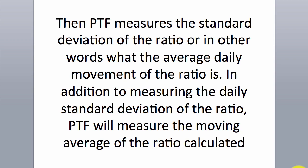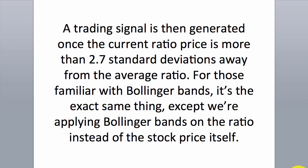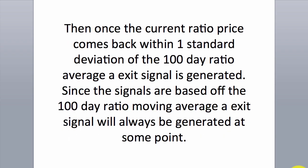In addition to measuring the daily standard deviation of the ratio, PTF will measure the moving average of the ratio calculated off the previous 100 trading days, so it will calculate what the average ratio price has been over the past 100 trading days. A trading signal is then generated once the current ratio price is more than 2.7 standard deviations away from the average ratio. For those familiar with Bollinger Bands, it's the exact same thing, except we're applying Bollinger Bands on the ratio instead of the stock price itself.